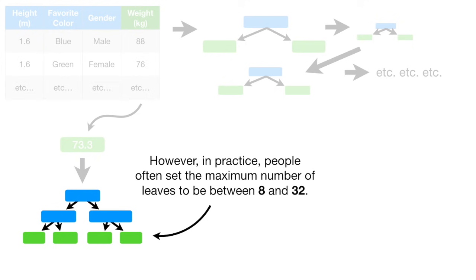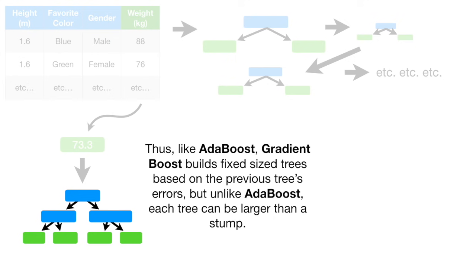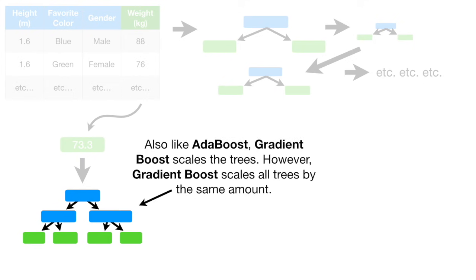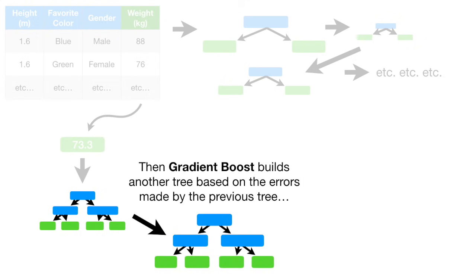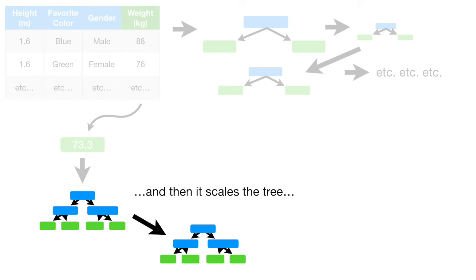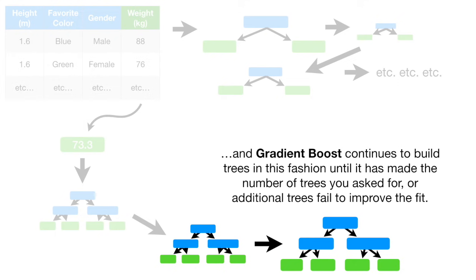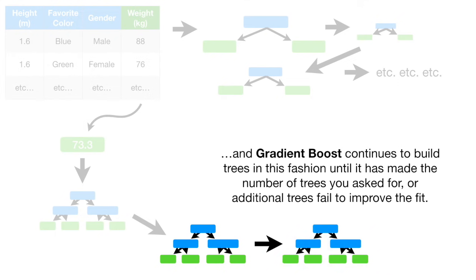However, in practice, people often set the maximum number of leaves to be between 8 and 32. Thus, like Adaboost, Gradient Boost builds fixed-sized trees based on the previous tree's errors. But unlike Adaboost, each tree can be larger than a stump. Also, like Adaboost, Gradient Boost scales the trees. However, Gradient Boost scales all trees by the same amount. Then Gradient Boost builds another tree based on the errors made by the previous tree, and then it scales the tree. Gradient Boost continues to build trees in this fashion until it has made the number of trees you asked for, or additional trees fail to improve the fit.